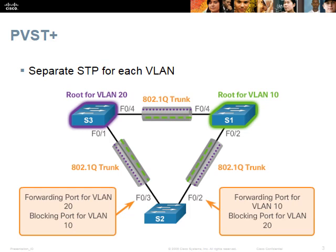S2's FA0/3 port is the switch's root port, and hence a forwarding port for VLAN 20, but it is a blocking port for VLAN 10. Therefore, only VLAN 20 data will use S2's FA0/3. S2's FA0/2 port is the switch's root port, and hence a forwarding port for VLAN 10, but it is a blocking port for VLAN 20. Therefore, only VLAN 10 data will use S2's FA0/2 port.